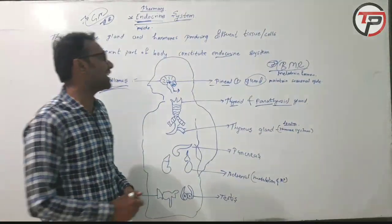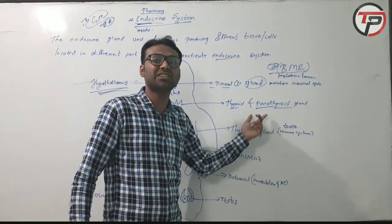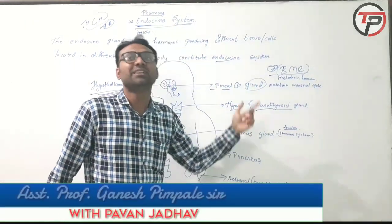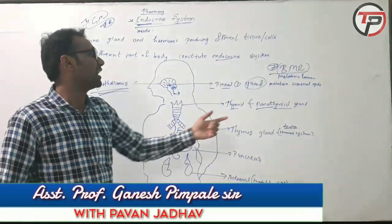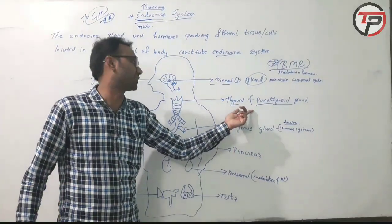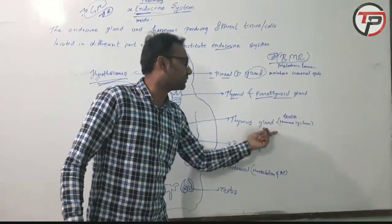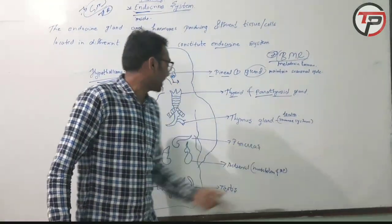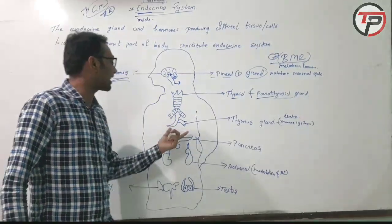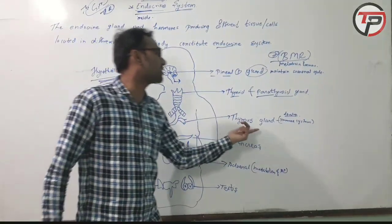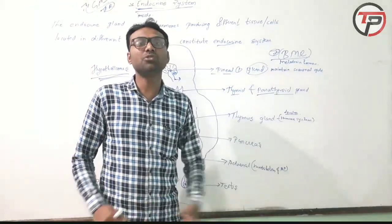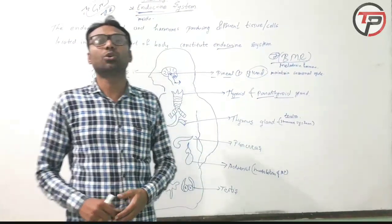The thyroid and parathyroid gland is a very important gland. It is related to growth hormone — both deficient secretion and hyper secretion. Next is the thymus gland. The thymus gland is related to the immune system, which means it is involved in disease defense.